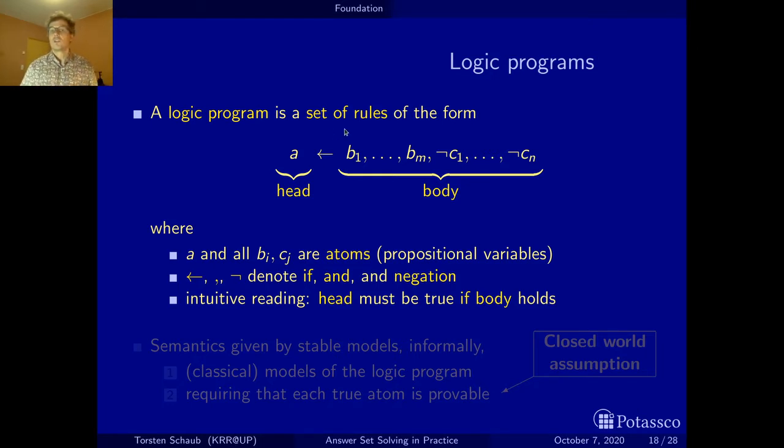A rule as such is a conditional which says the head of the rule, which is the conclusion of the rule, is true if all conditions in the antecedent or simply the body are true. And so the ingredients of this rule, A, the BIs and the CIs are atoms. And these are just atomic propositions which can be true or false.